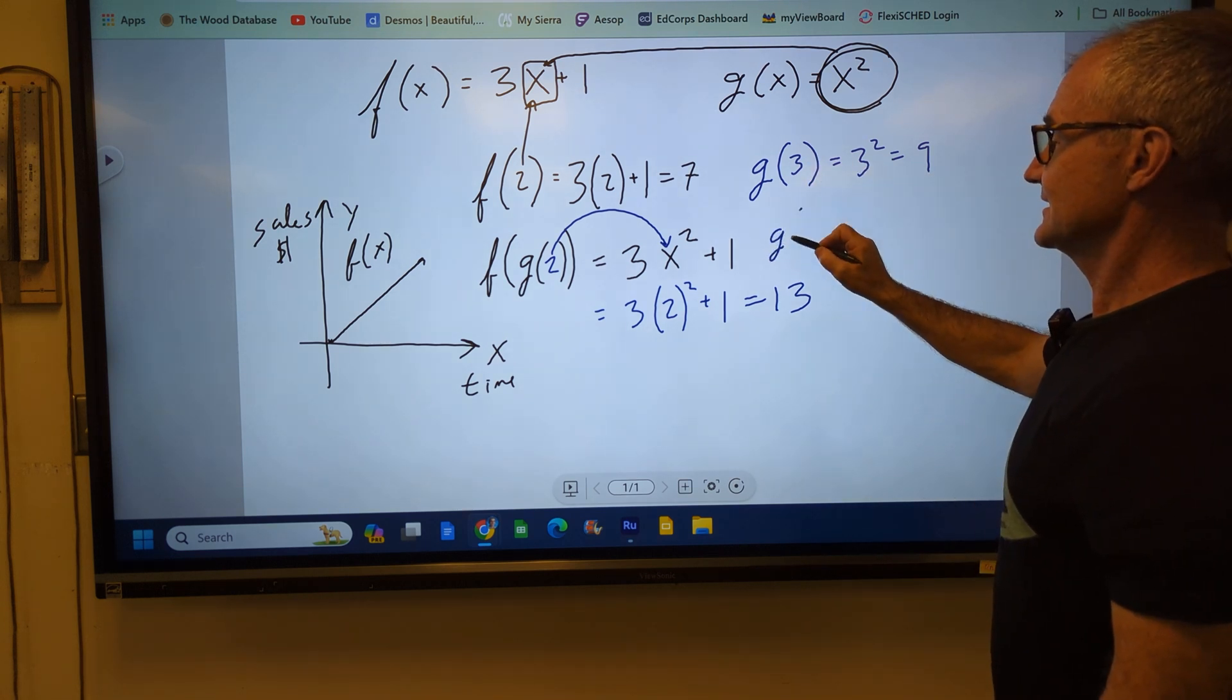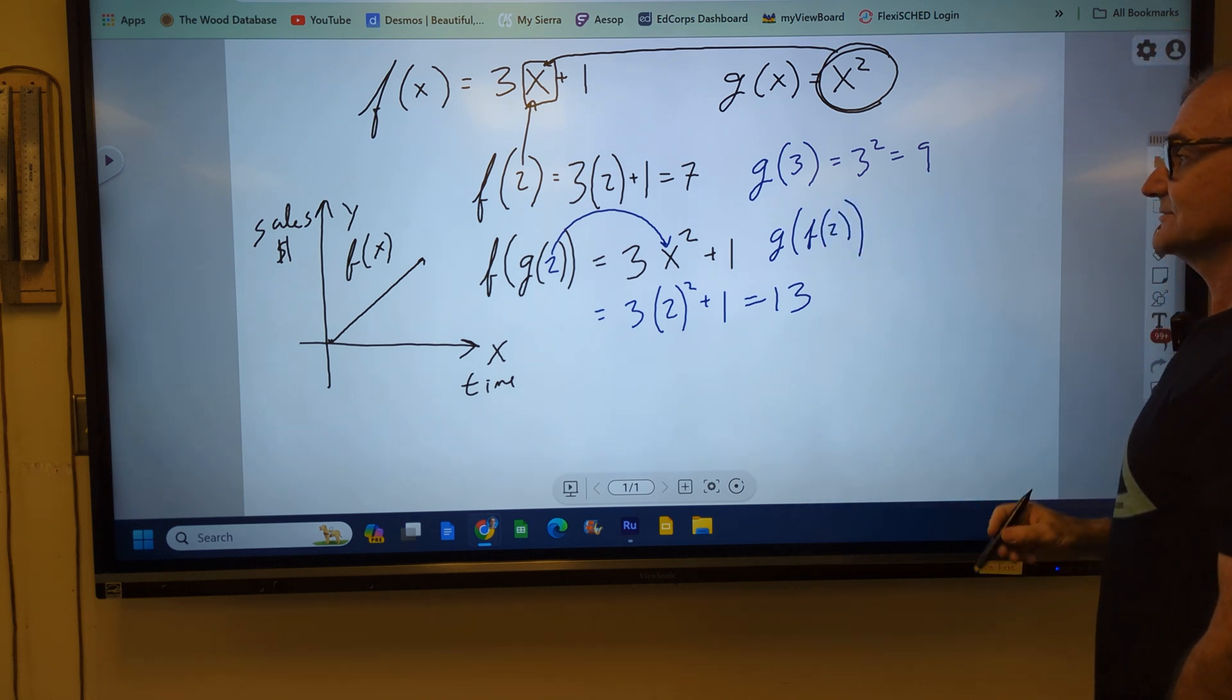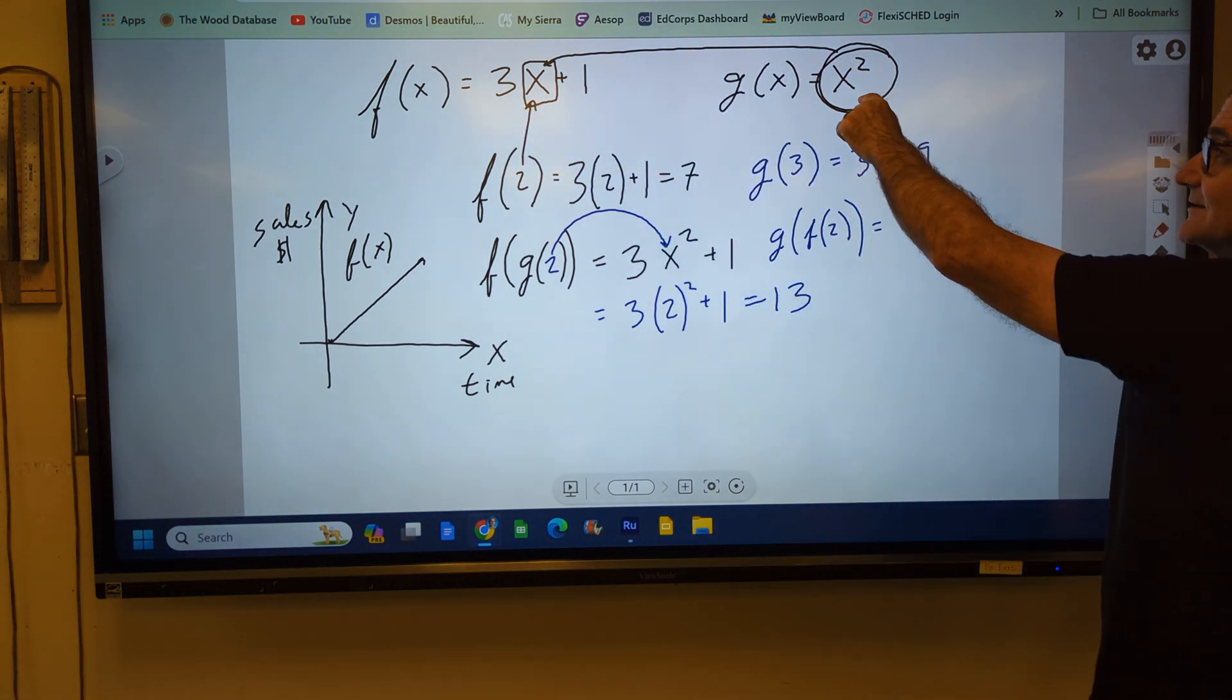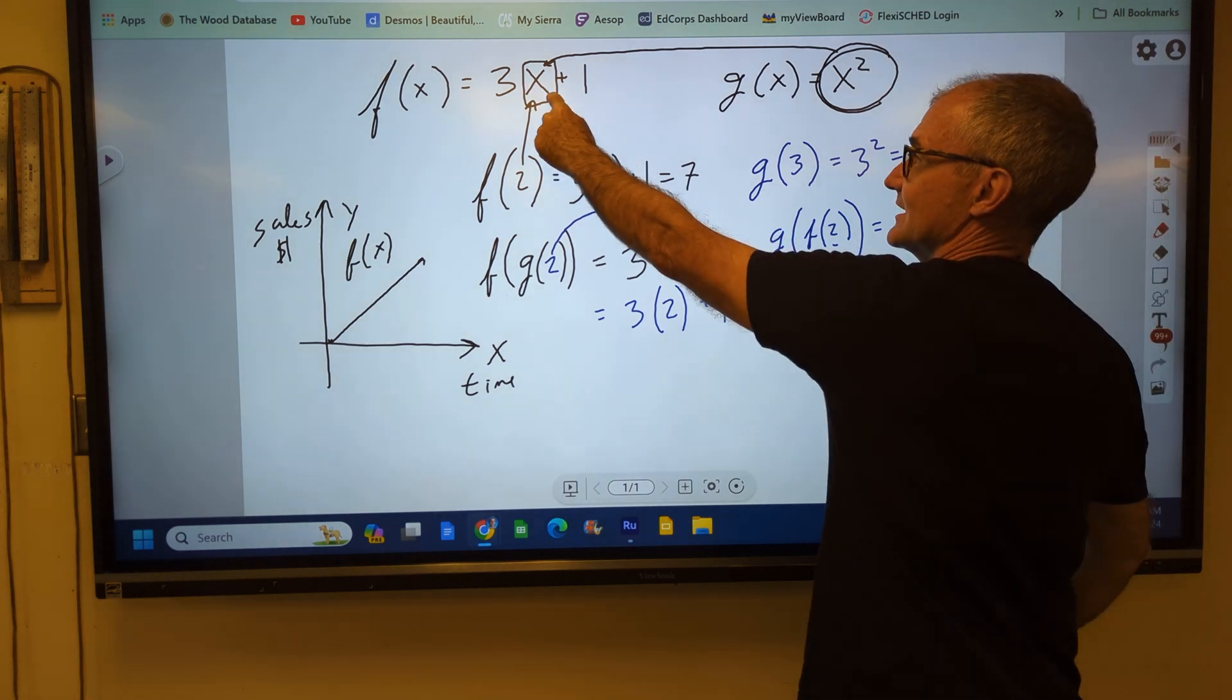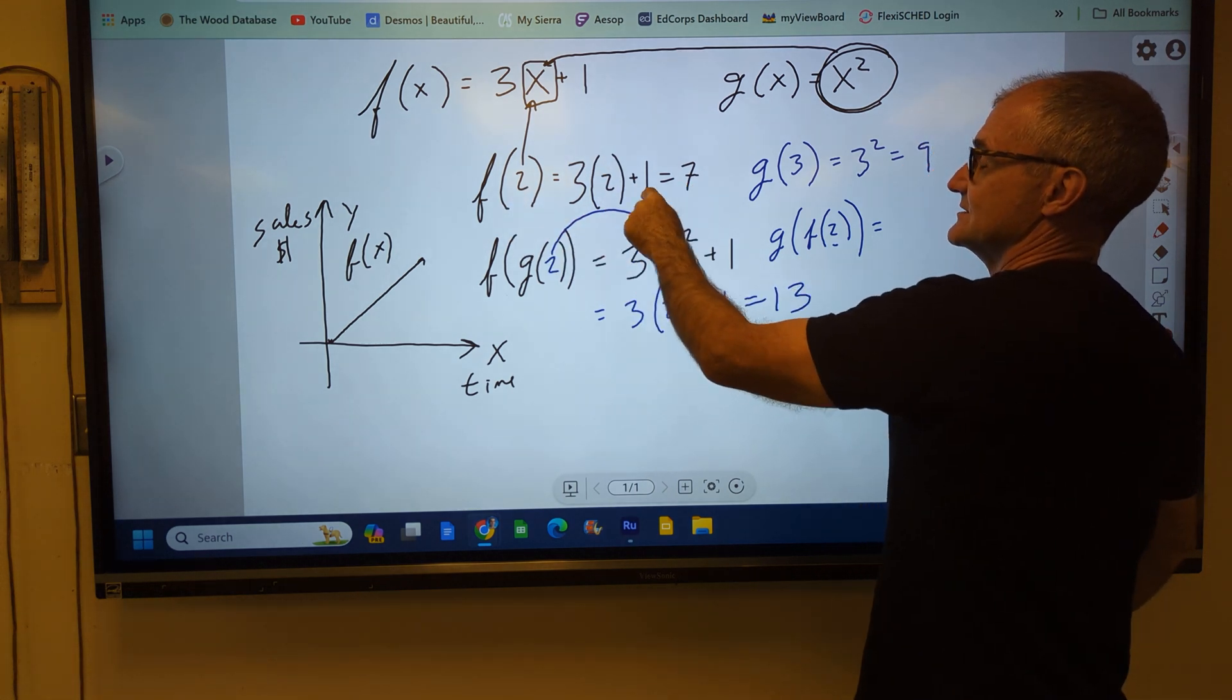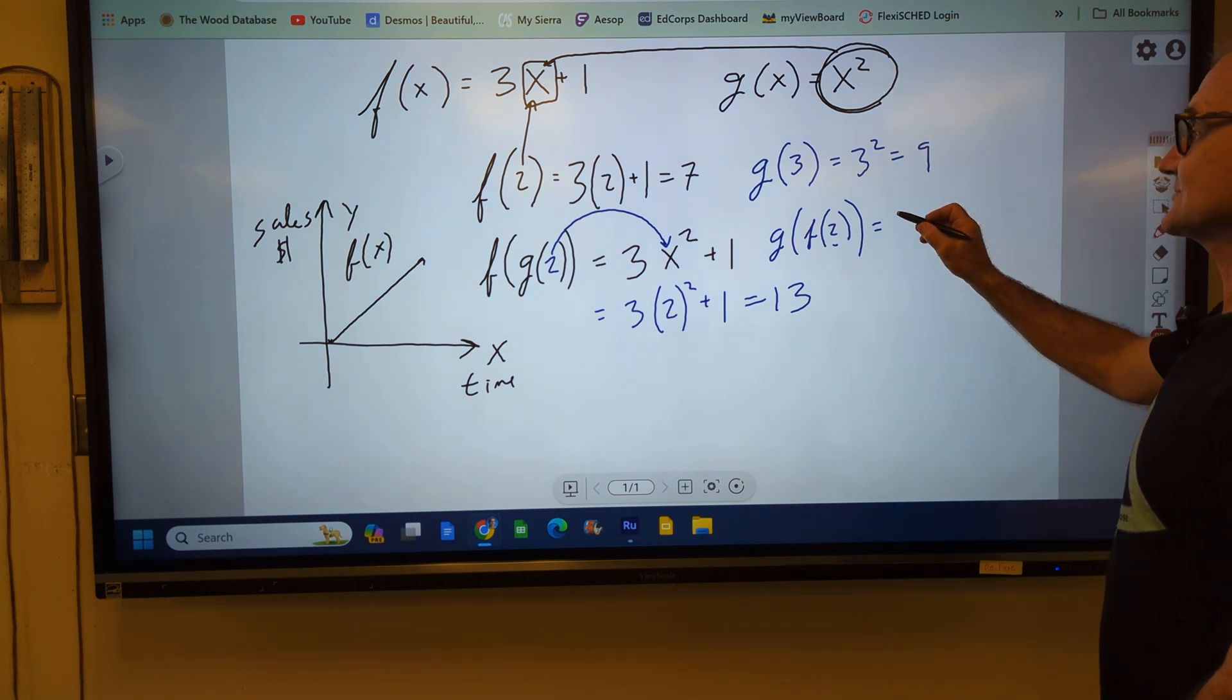Let's find g of f of 2. So I'm going to find g of f of 2. I'm going to take now my f of x function and plug it in here. But I could actually take that 2 and do this first or I could do it afterwards. So I'm going to take that 2, plug it in f of x. 2 goes in there. 2 times 3 is 6. 6 plus 1 is 7. f of 2 is equal to 7. So I'm going to replace this with a 7. 7 now goes into this x squared and I get 7 squared or 49.